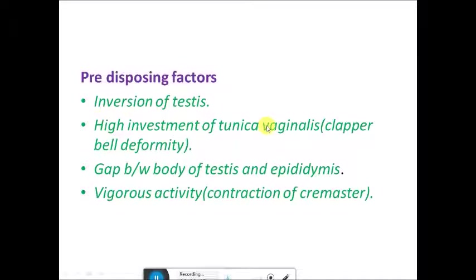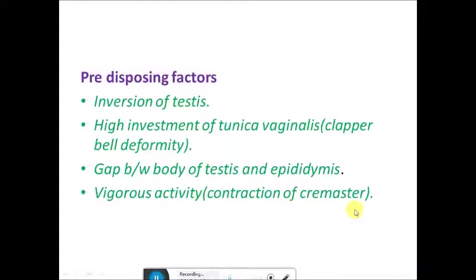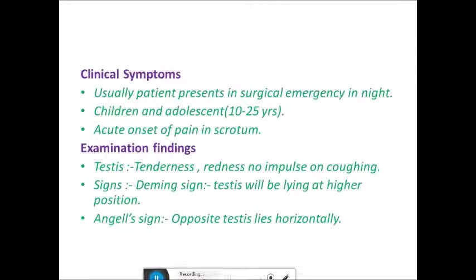The predisposing factors for torsion are: inversion of testes, and high investment of tunica vaginalis also called bell clapper deformity, which leads to a large space between the testes and epididymis. If there is a gap between the body of the testes and the epididymis, it is vulnerable to rotation. Any vigorous activity causing contraction of the cremaster muscle may also lead to testicular torsion.